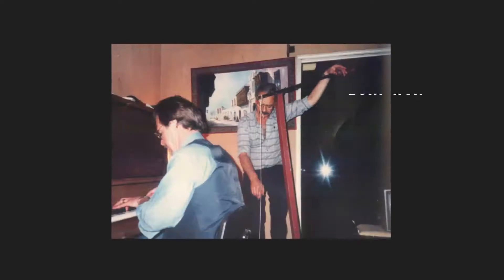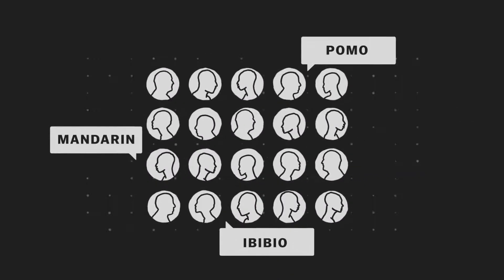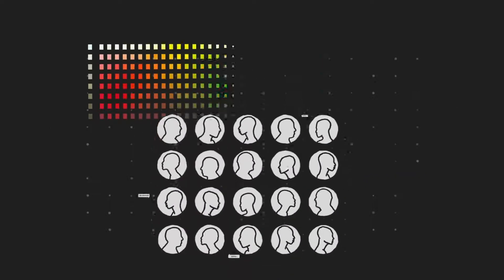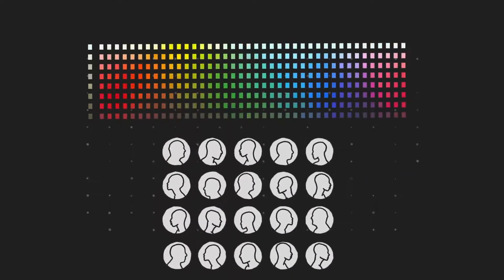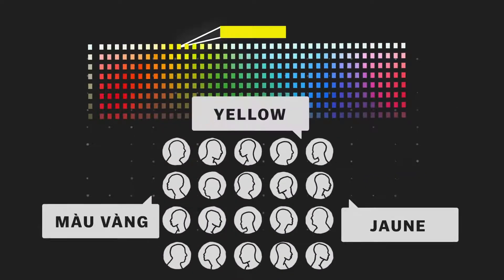But in 1969, two Berkeley researchers, Paul Kay and Brett Berlin, published a book challenging that assumption. They had asked 20 people who spoke different languages to look at 330 color chips and categorize each of them by their basic color term. And they found hints of a universal pattern.